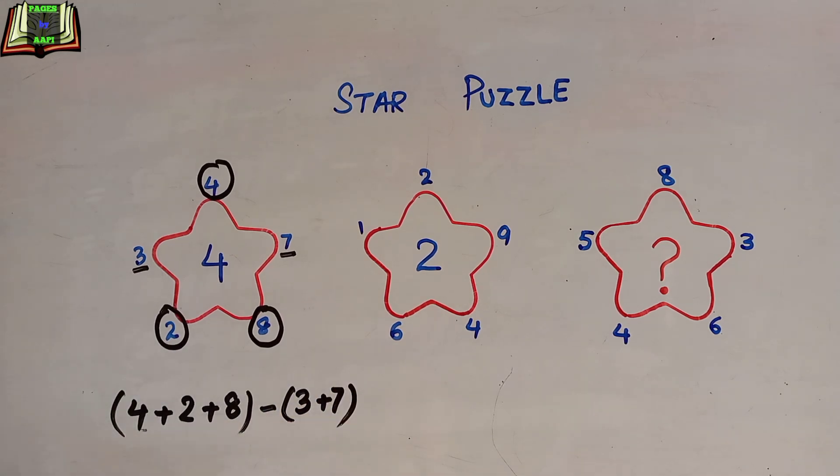So let's solve this: 4 and 2 is 6, and 8 is 14, minus 7 and 3 is 10, which equals 4. So in this way, the middle number is placed. But we will check the second star so that we can solve the third one.